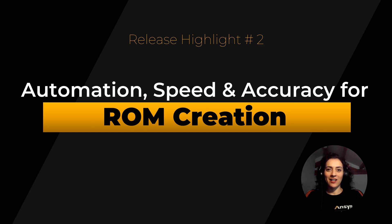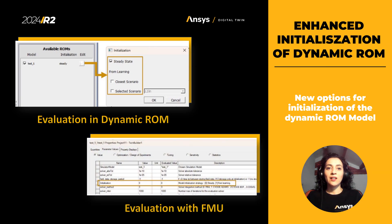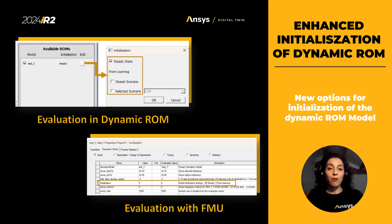The second release highlight is automation speed and accuracy for reduced order models creation. This release comes with new options for initialization of dynamic ROM models. Our users can choose the best strategy for initialization of the model during the evaluation phase of the reduced order model and the exported FMU.